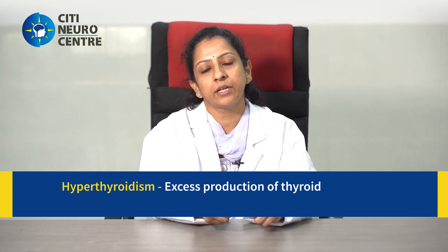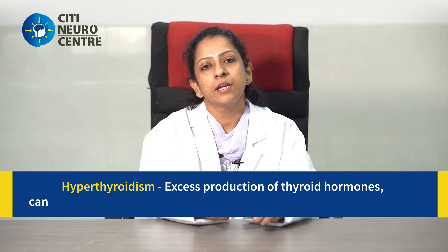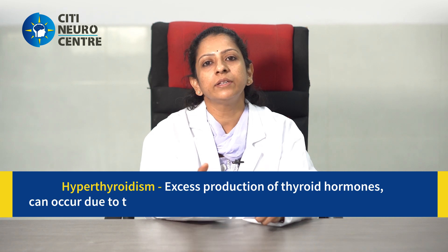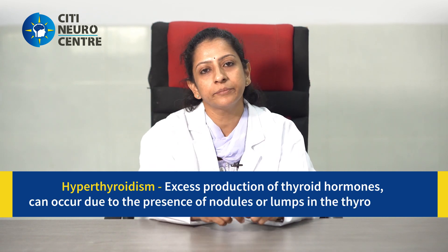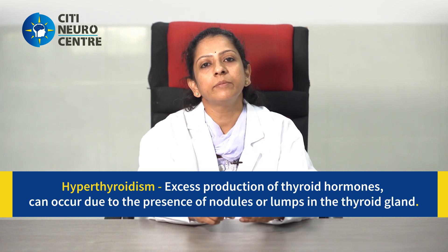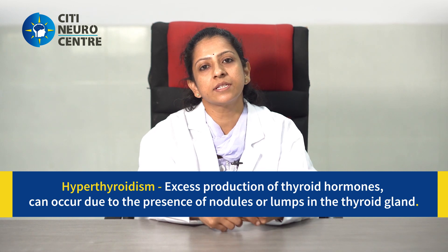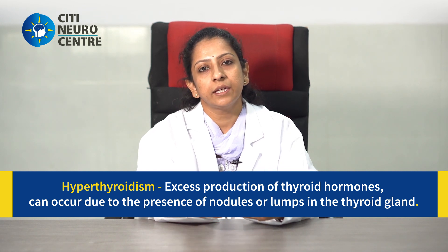Excess production of thyroid hormones — hyperthyroidism — can occur when you have some nodules or lumps in the thyroid gland. It can occur in a condition called Graves' disease, in some thyroiditis, and also when there is excessive iodine intake, which may be because of medications you may be taking for other illnesses.